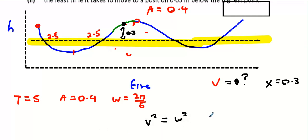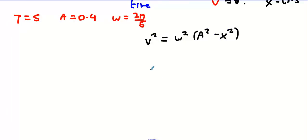And then we can say that v² is (2π over 5)² times (0.4² - 0.3²), which is going to be 4π² over 25 multiplied by 0.07.